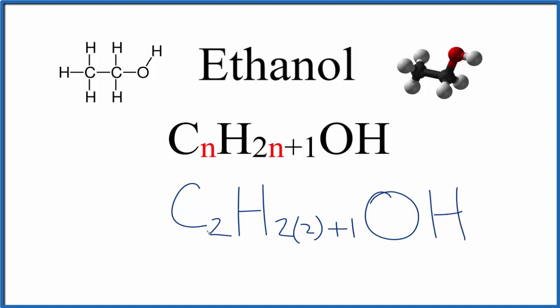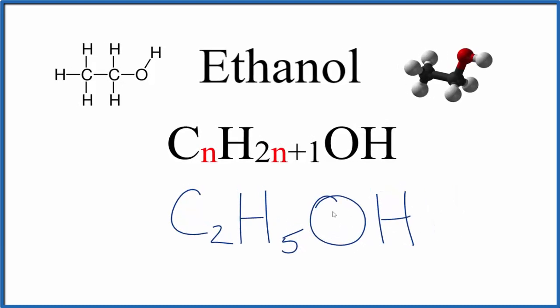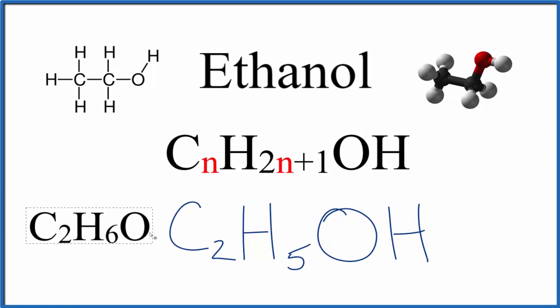That gives us C2H5OH as the formula for ethanol. You might also see this formula written in a more condensed form here, where we have the hydrogens all together. So C2H6O. This is probably more common though.